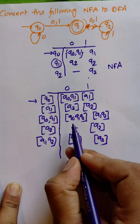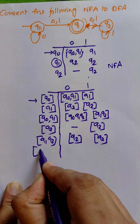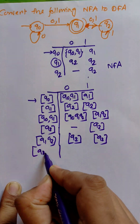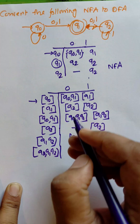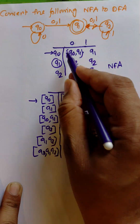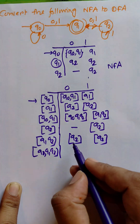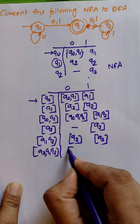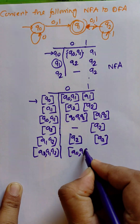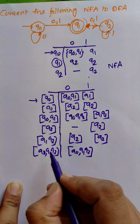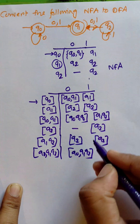Now the remaining new state is {q0, q1, q2}. For input 0: q0 to 0 is {q0, q1}, q1 to 0 is q2, and q2 to 0 is empty — taking the union gives {q0, q1, q2}. For input 1, {q0, q1, q2} to 1 is {q1, q2}.